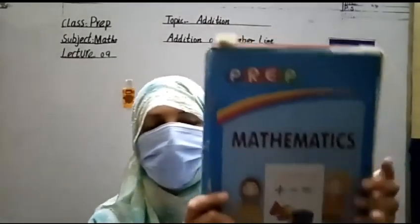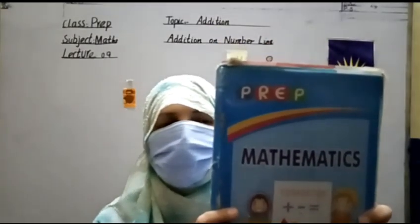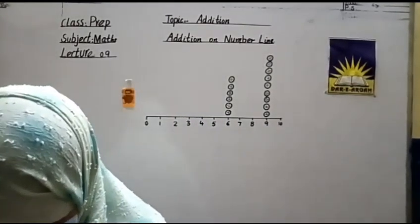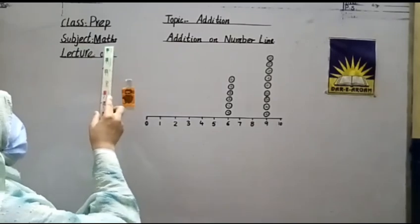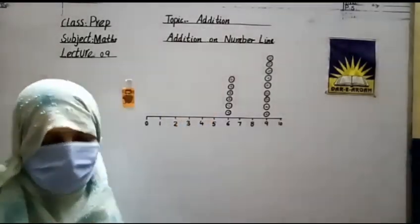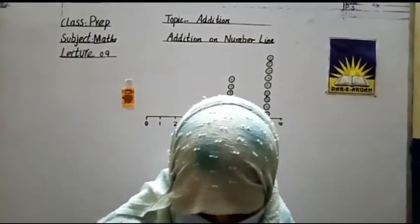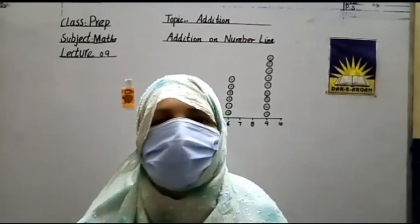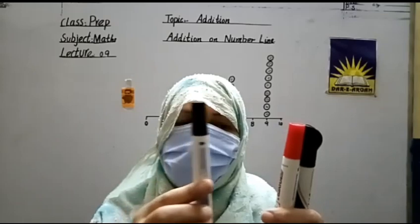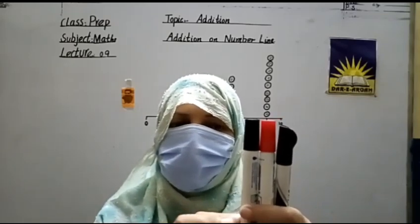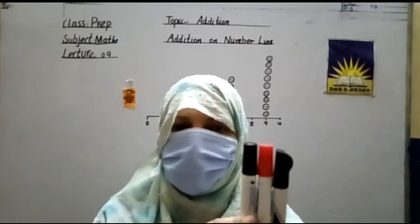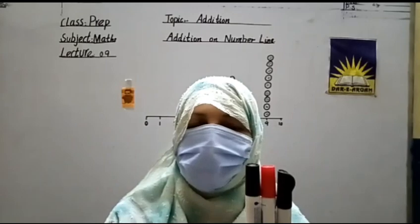Okay my dear students, this is your maths book. Now all the students take it out from your bags. Subject maths, Lecture 9. Today our very interesting topic is Addition. Addition means to add something. For example, I have two markers and I need one more. So I add this marker to the two markers. Now count these markers: one, two, three. So I need three markers. This is what Addition means.